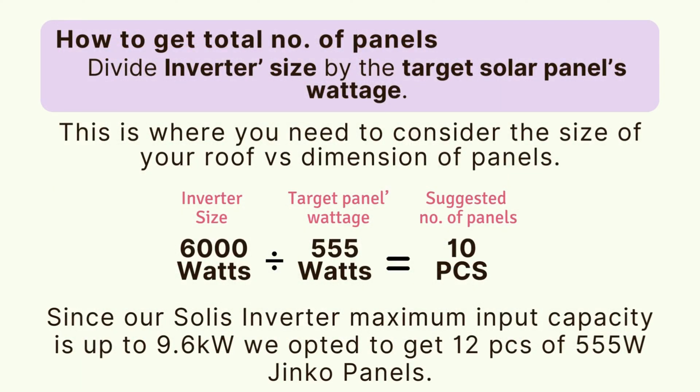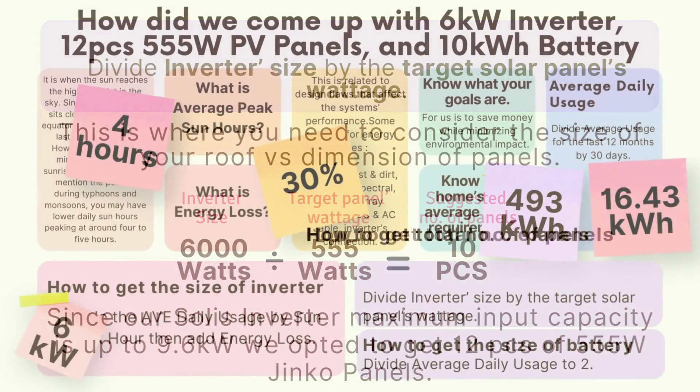Since the maximum usable PV input power of the 6-kilowatt hybrid inverter is 9.6 kilowatts, we increased to 12 panels. If we were to maximize the maximum PV input power, we could go up to 20 pieces, but they wouldn't all fit on our roof.